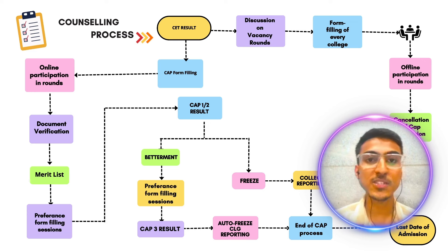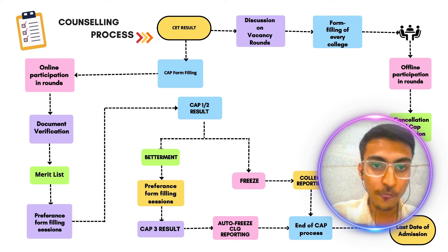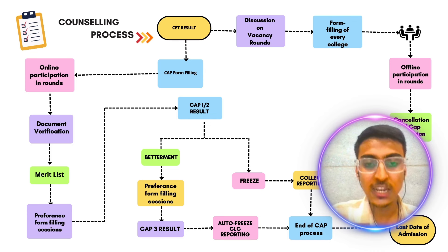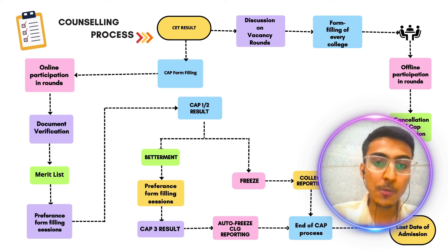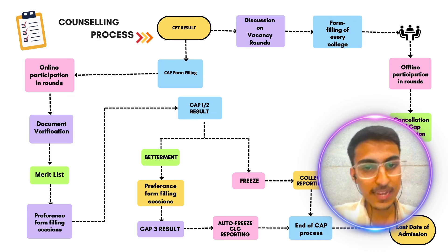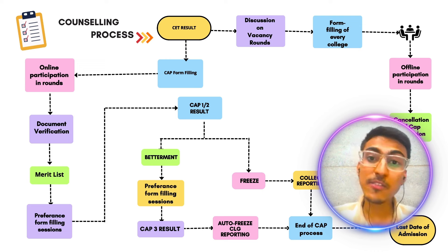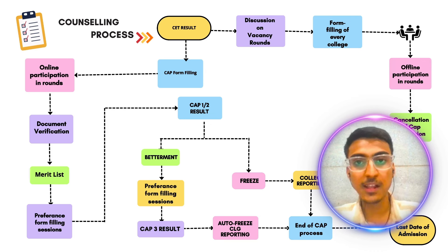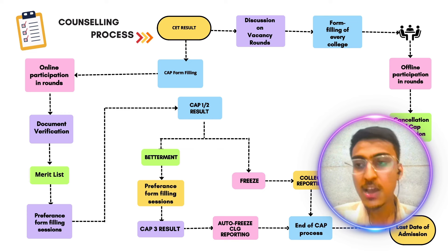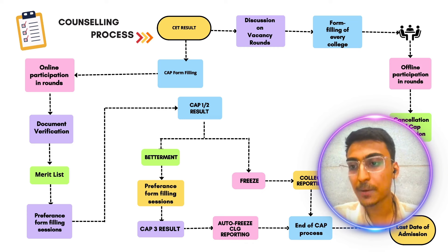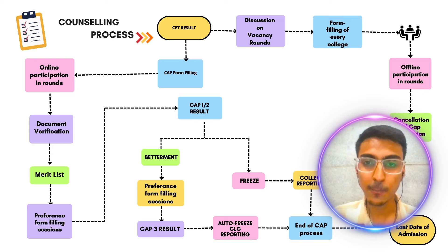तो यह होती है आपकी complete roadmap। थोड़ा simplified way में बताता हूँ — CET का result आने के बाद form filling होगा, form filling में document verification होगा, उसके बाद CAP Round 1 चलेगा, CAP Round 2 चलेगा, CAP Round 3 चलेगा। CAP rounds में आपके पास दो options हैं — betterment और freeze। CAP Round 1 में तो आपको betterment के लिए ही जाना है। CAP Round 3 में जो भी final result आता है, वो auto freeze होता है — auto freeze होने के बाद वहाँ आपको confirmed admission लेना ही पड़ेगा। जैसे CAP process end होती है, उसके बाद vacancy plus management process शुरू हो जाती है — 20% management seats plus vacancy seats जो होती हैं, वो college fill up करते हैं। वो उनके personal, physical rounds होते हैं — जो हर एक college का आपको खुद से form भरना पड़ेगा और offline participate करना होगा।